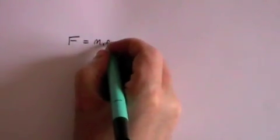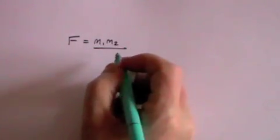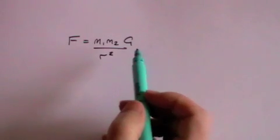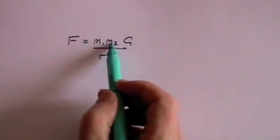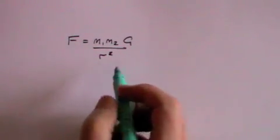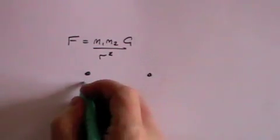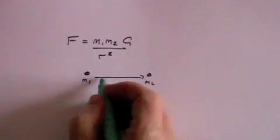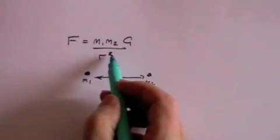Newton said that if you have two masses m1 and m2, then the force between them, which is the gravitational force, is equal to the mass 1 times mass 2 divided by the distance between them. So here's m1, here's m2, and here's the distance between them, r, the distance between them squared.